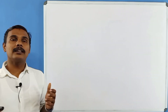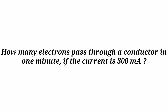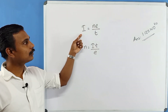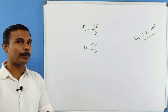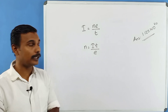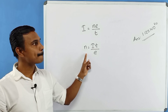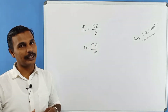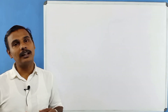The answer is 53 A. For the next problem, q is equal to ne, and the answer is 1.125 × 10²⁰. We will see the next topic in the next video.